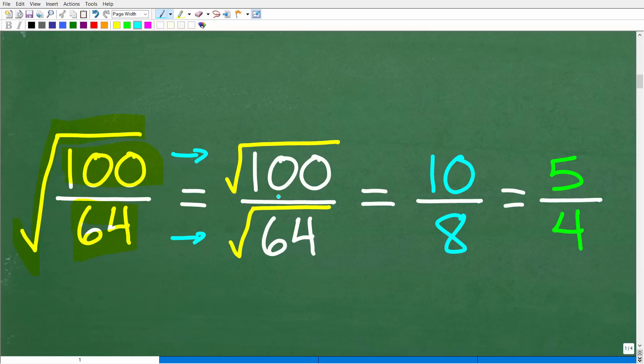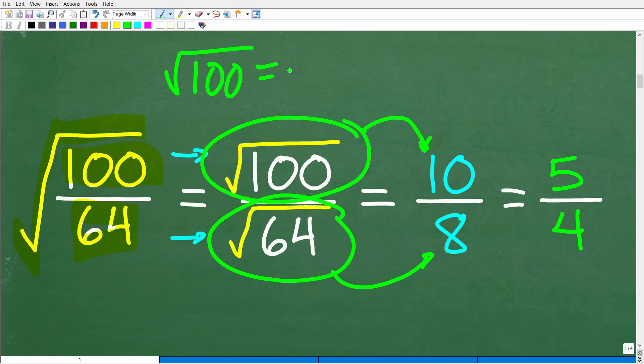So here I can rewrite this problem as the square root of 100 over 64 as the square root of 100 over the square root of 64, okay? Now, what's the advantage of doing that? Well, the advantage is I know what the square root of 100 is. In fact, it is 10, right? And the square root of 64 is eight. Now, if you're a little bit confused about what the square root is, basically, when you're taking the square root of a number, for example, like 100, what we're looking for is a number times itself that gets us back to 100, right? So 10 times 10 gets us back to 100. So therefore, 10 is the square root of 100.